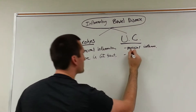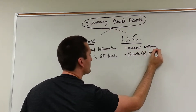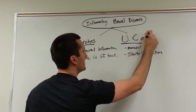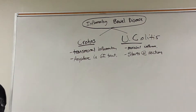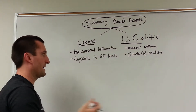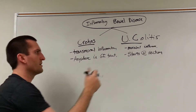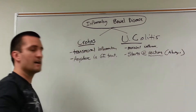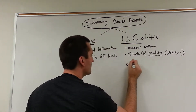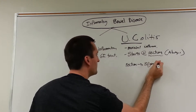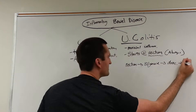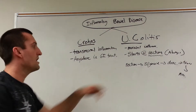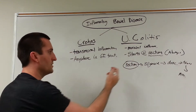Ulcerative colitis typically starts at the rectum. Look at the name — ulcerative colitis, colitis, meaning inflammation of the colon. So it's going to stay at the colon, while Crohn's will be anywhere in the GI tract. It starts at the rectum, always, and works its way up: rectum to sigmoid, to descending, to transverse, to ascending, and then maybe some cecum involvement. The inflammation is always going to involve the rectum.